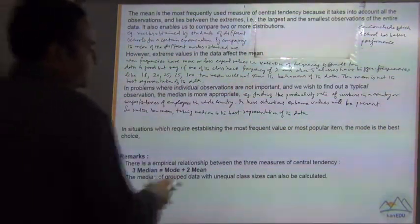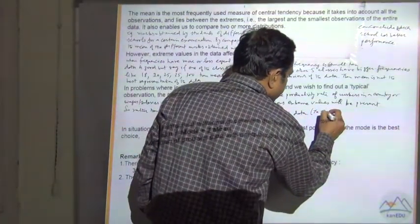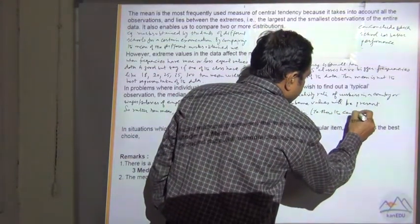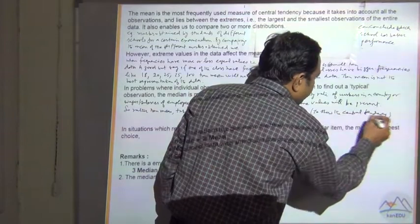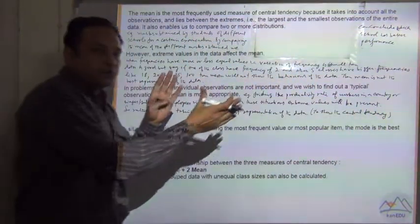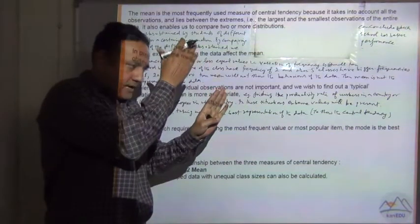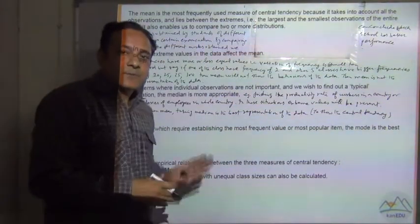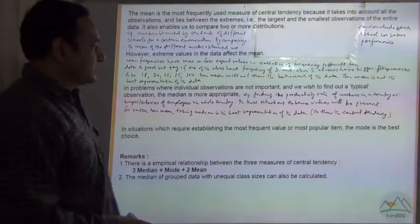This is the best representation of data to show the central tendency. Central means middle value. So 50% of the people are less than this salary and 50% of the people are above this salary. So median is the best representation of the data.